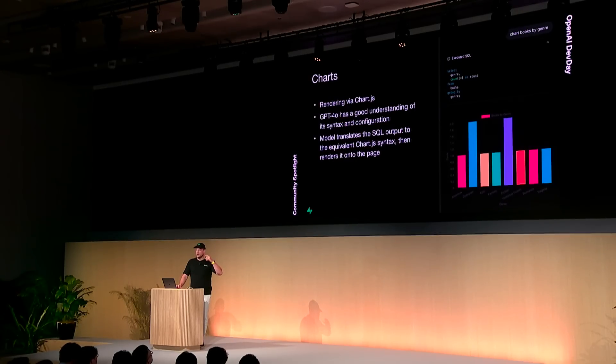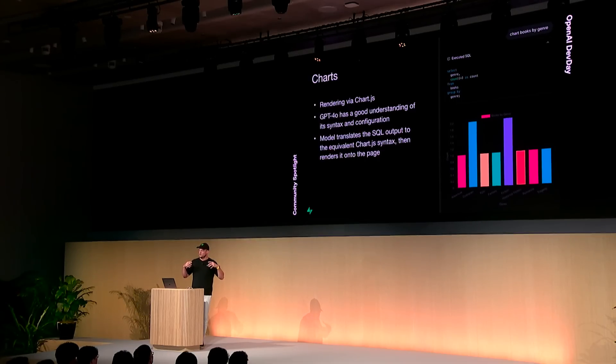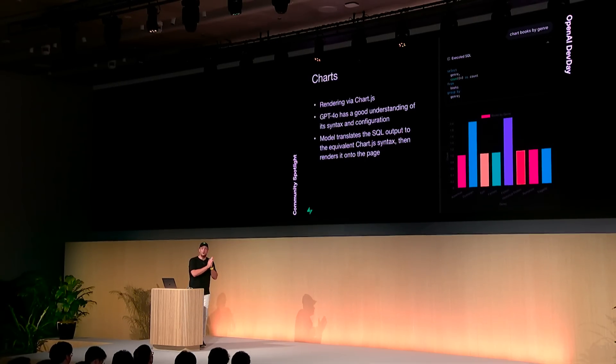Another great feature here: charts. We're using chart.js, one of the more mature charting libraries available in JavaScript. The reason we chose it is because GPT-4.0 has a really good understanding of its syntax and configuration. By simply chatting to the model, you can fully customize anything you can do with chart.js — change the chart type, the axis, the colors. As long as chart.js supports it, GPT-4.0 can make it happen.